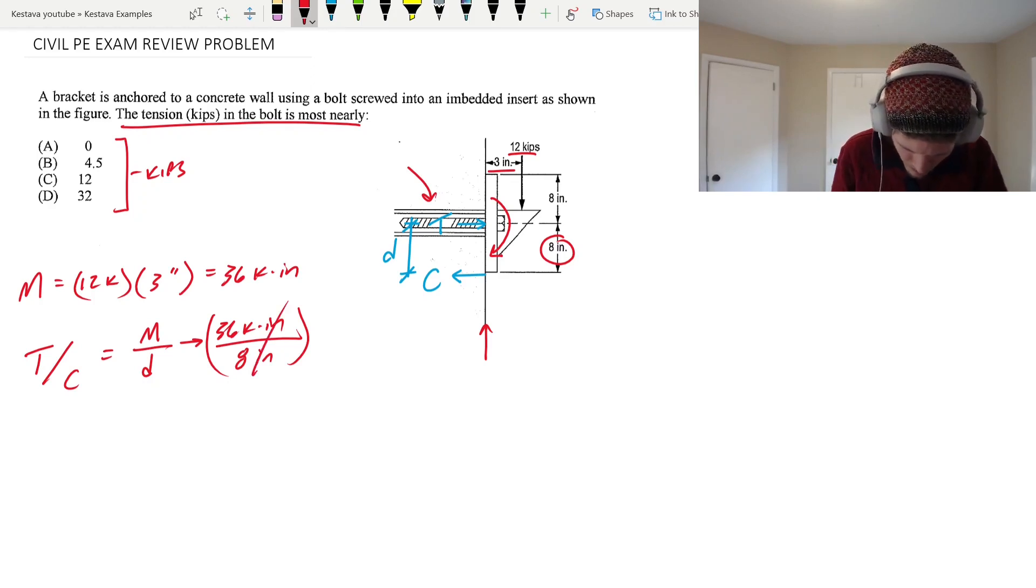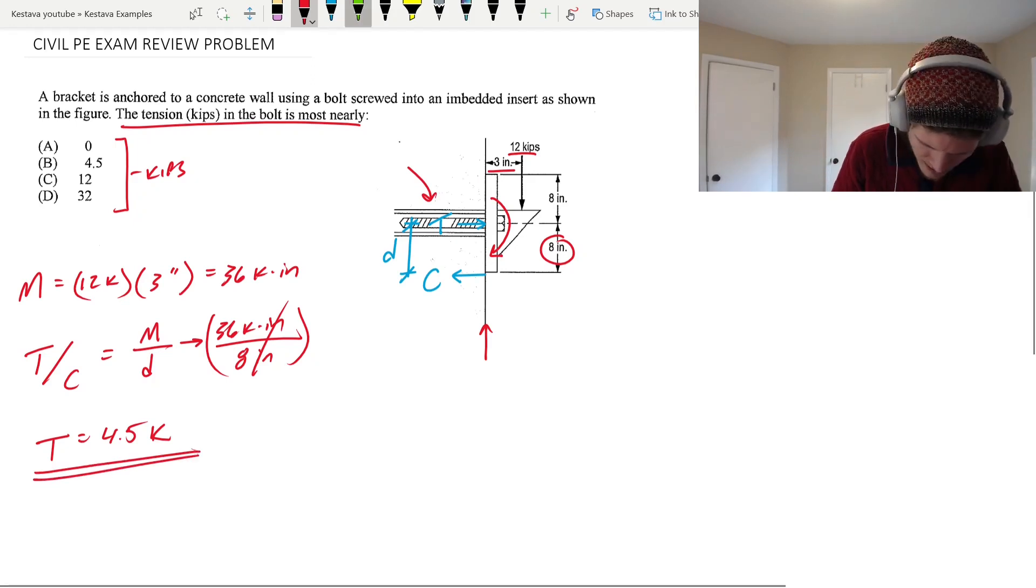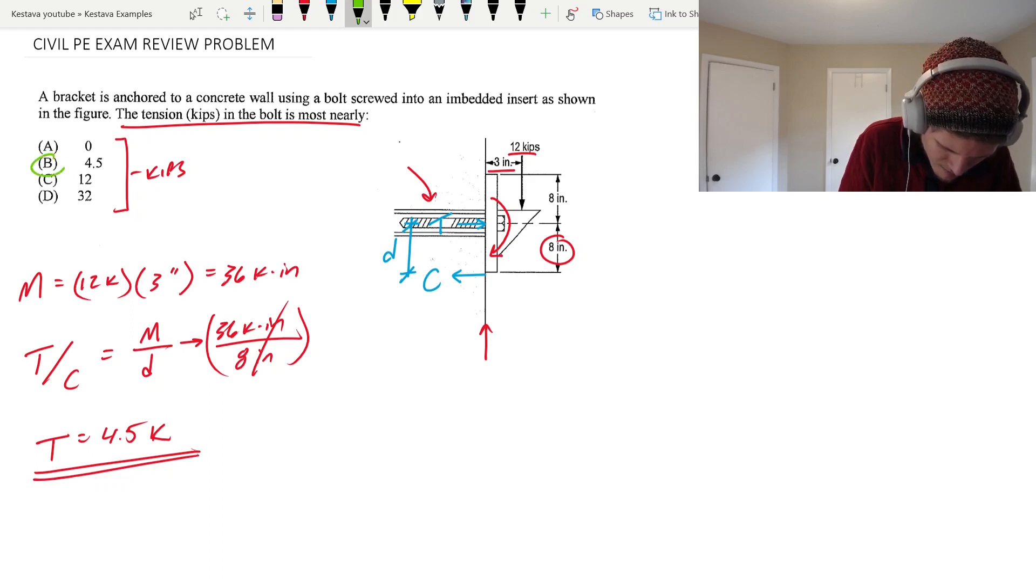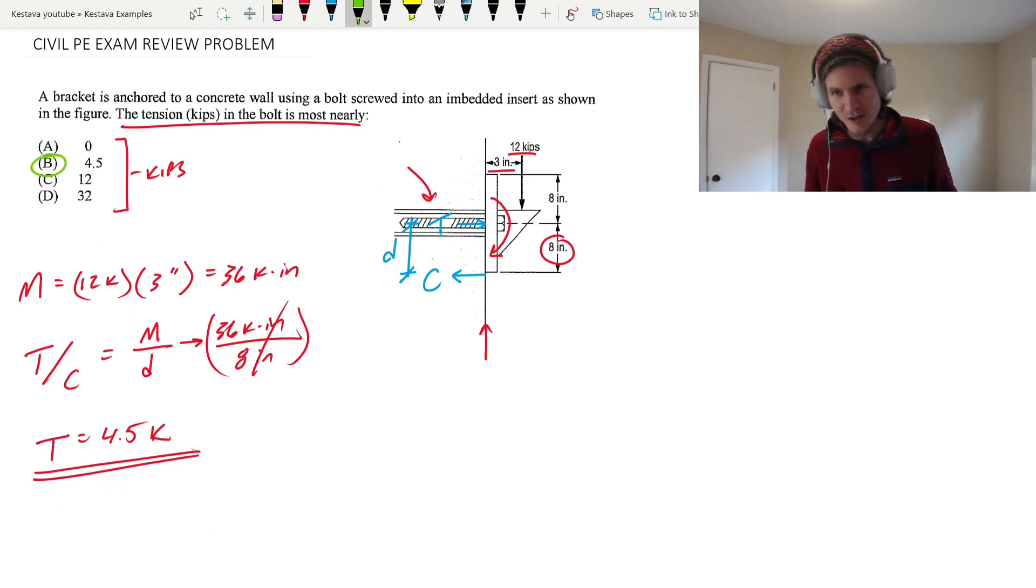So tension slash compression, we're only looking for tension in this case, that's the only thing being asked, is equal to 36 divided by 8, which is 4.5 kips. So we've kept it in kips, we've kept the units, that looks good to me. And if we stay where we are, we have an answer that looks good too. So we have our answer, but before you go anywhere, remember the key thing about this video is couples.